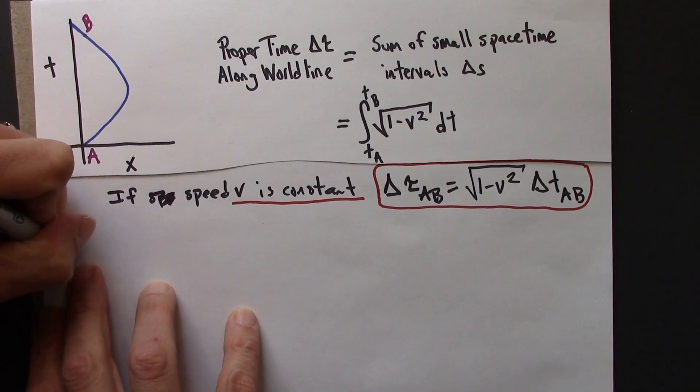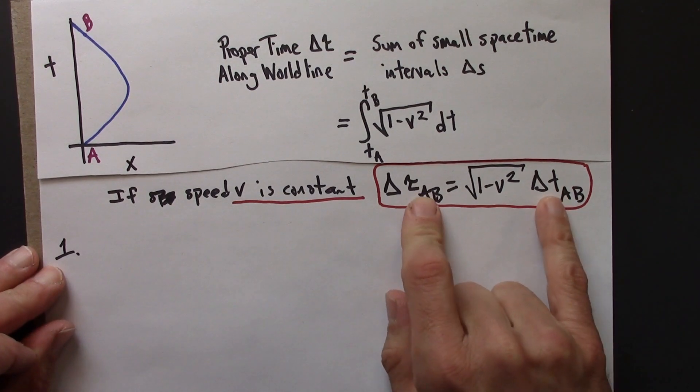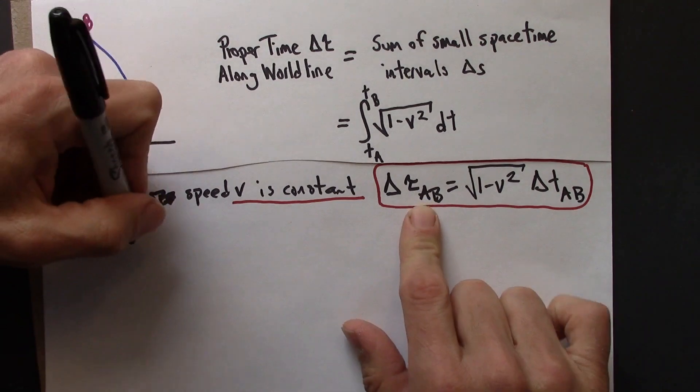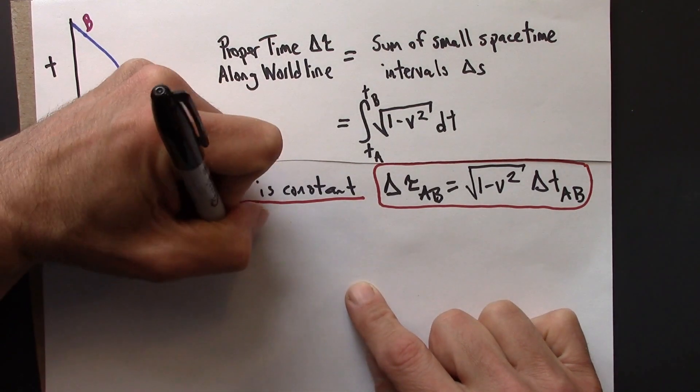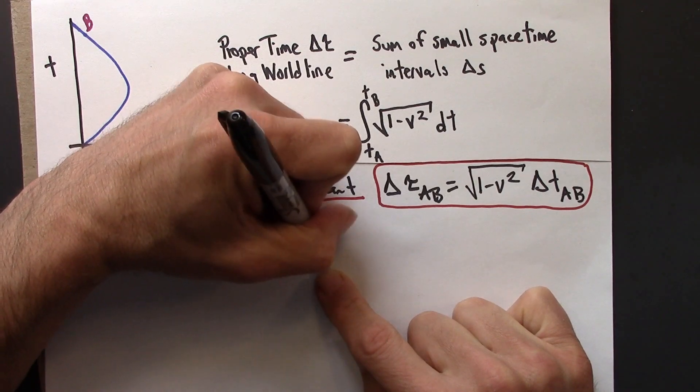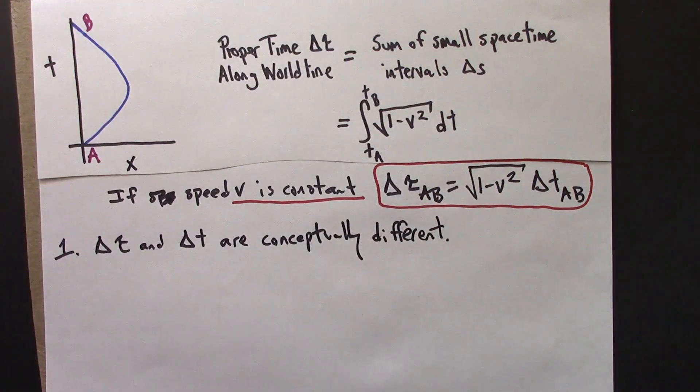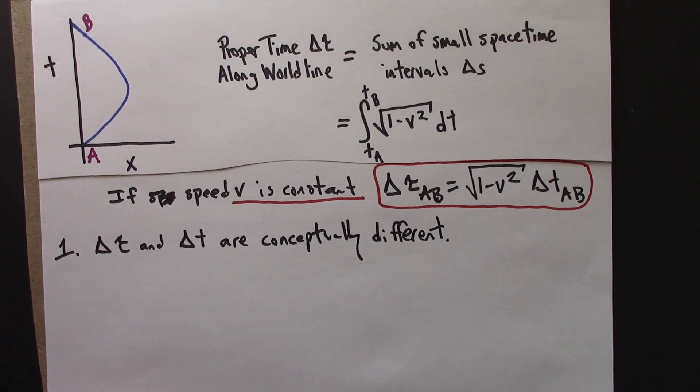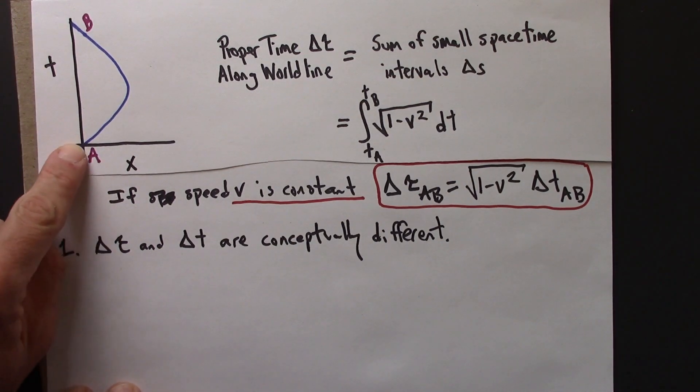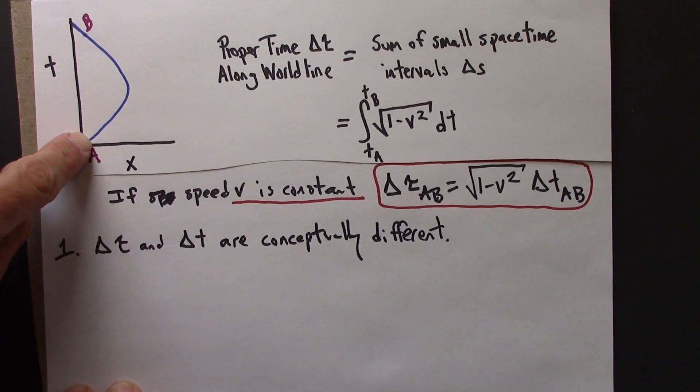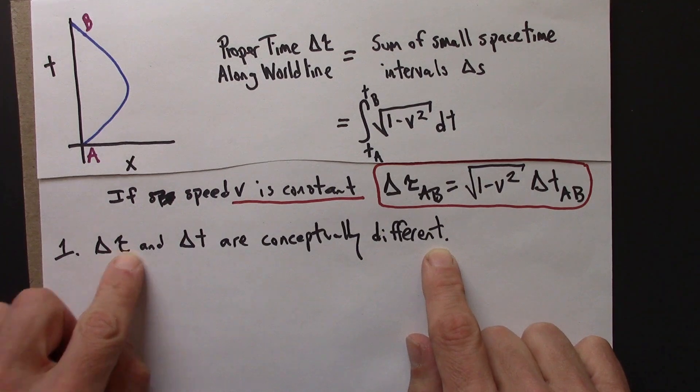The first thing to highlight is that these quantities, they're both times, they're both t's just in different alphabets, but they're conceptually very different things. So delta tau and delta t are conceptually very different. Delta t is the time measured in a particular reference frame between A and B, whereas delta tau, the proper time, is the time measured by a clock that goes on this journey along this world line. So we wouldn't expect them to have the same value.